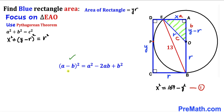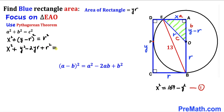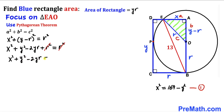Recalling the identity (a minus b) squared equals a squared minus 2ab plus b squared, we expand the left side: x squared plus y squared minus 2yr plus r squared equals r squared. The r squared terms cancel, leaving x squared plus y squared minus 2yr equals 0, which rearranges to x squared equals 2yr minus y squared. This is Equation 2.